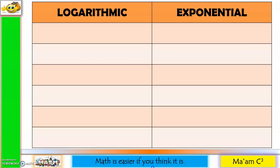Let us convert logarithmic form to exponential form. Here is the technique: you start with b, and then you raise it to y — so you have b raised to y — and then that equals x.